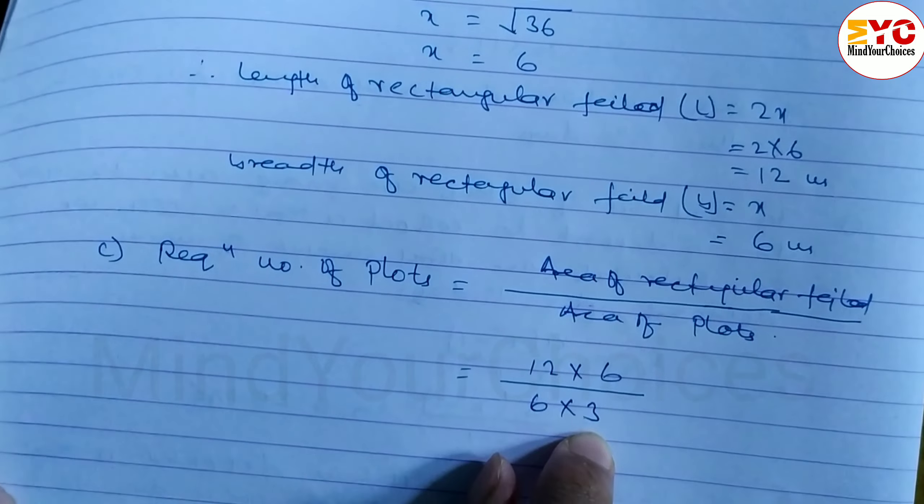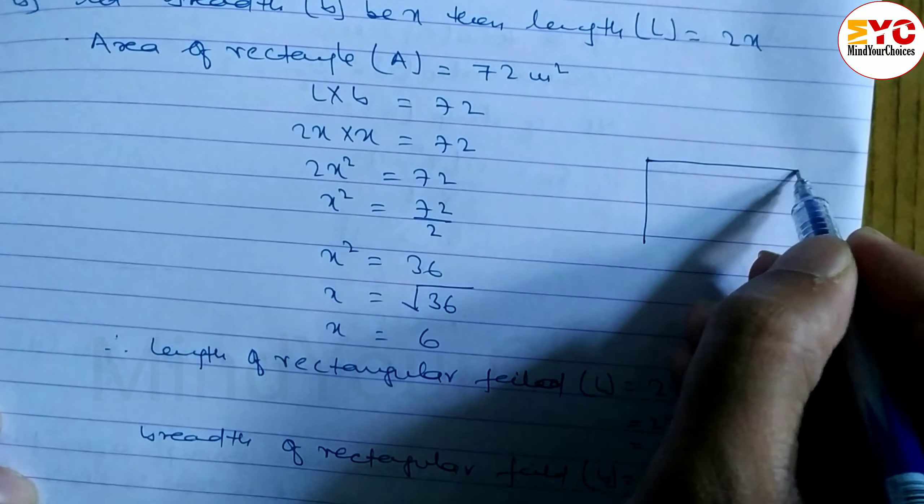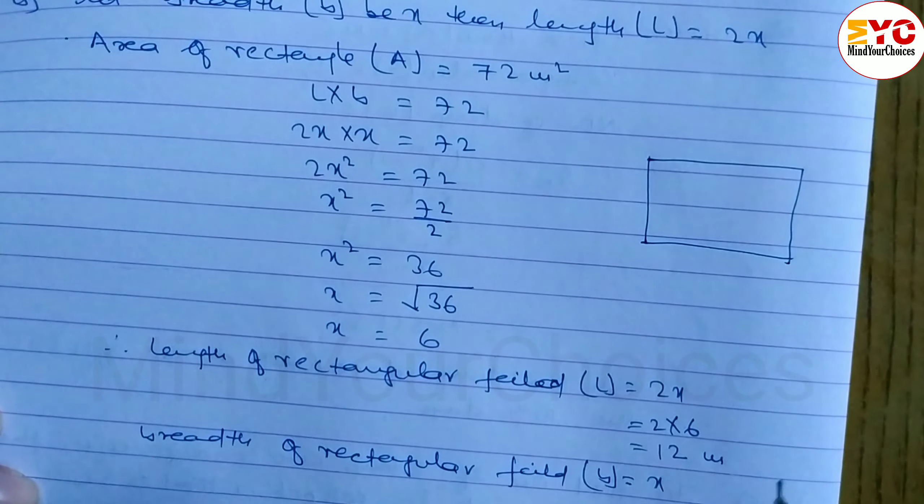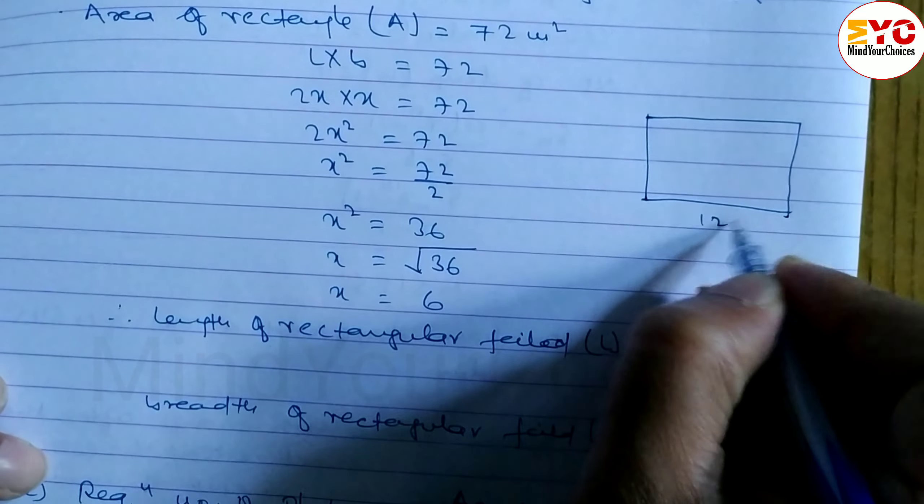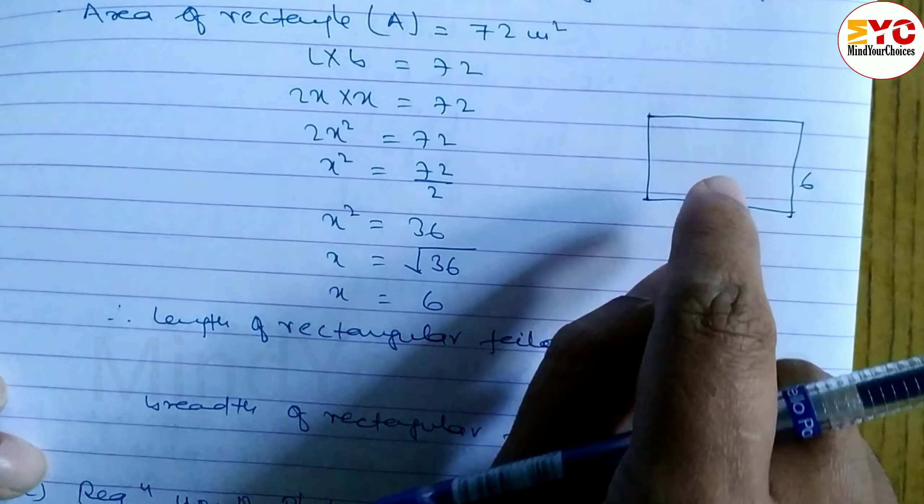In the field, length is 12, breadth is 6. For plots, length is 6, breadth is 3.